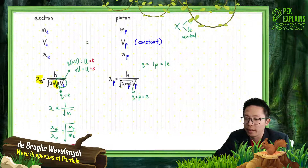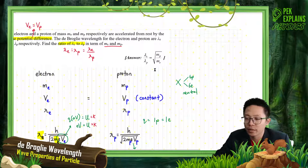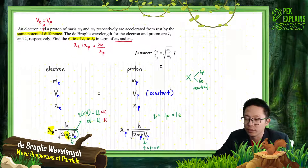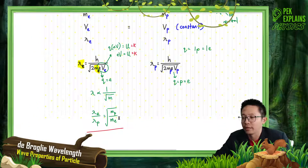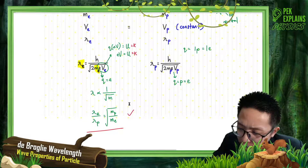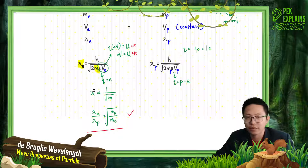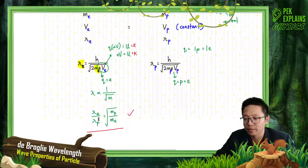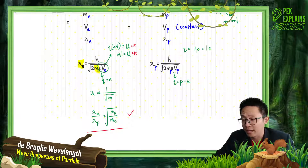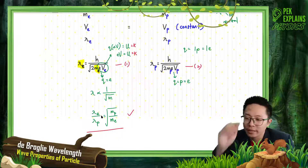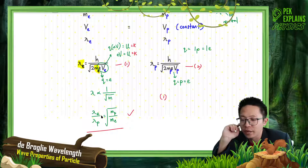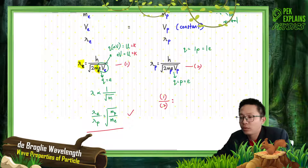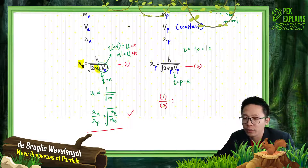That's the answer — lambda electron over lambda proton is square root of mass of proton over mass of electron. The other way — if you cannot follow the proportional shortcut — is the actual method: write equation one for electron and equation two for proton, then do equation one divided by equation two. So we have lambda electron divided by lambda proton on the left-hand side, and on the right-hand side all the full formula terms.